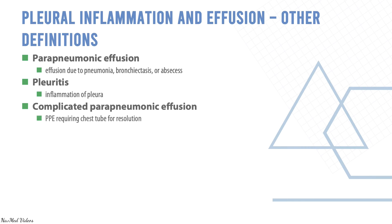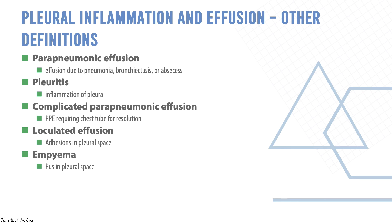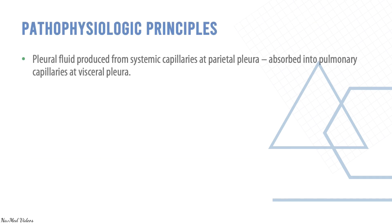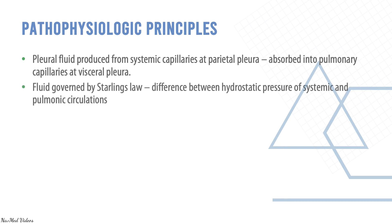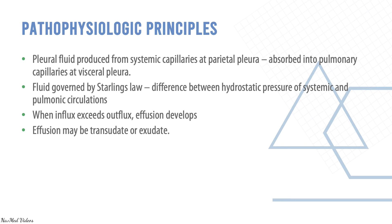A complicated parapneumonic effusion requires chest tube for resolution. Loculation occurs when there are adhesions in the pleural space, and empyema refers to pus in the pleural space. Pleural fluid is produced from systemic capillaries at the parietal pleura and absorbed into pulmonary capillaries at the visceral pleura, governed by Starling's law — the difference between hydrostatic pressures of the systemic and pulmonary circulations. When influx exceeds outflux, effusion develops, which may be transudate or exudate.